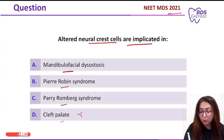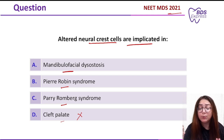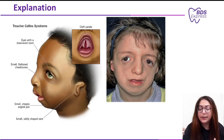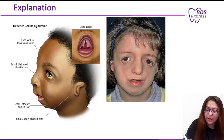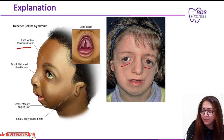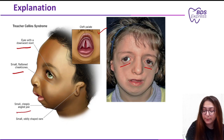First and foremost, I'll rule out cleft palate. Cleft palate can be seen in mandibulofacial dysostosis, that is Treacher-Collins syndrome, but it is a separate finding. Now in Treacher-Collins syndrome, you can see downward slanting eyes, cleft palate, small flat cheekbones, a small steep-angle jaw, deficiency of the mandible, and small oddly shaped ears.